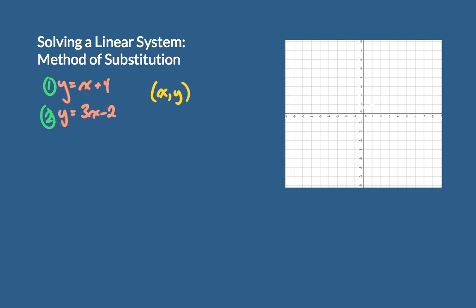We will know the solution when this y and this y are the same, and this x and this x are the same. To say it another way, we will have the solution when x equals x and y equals y — that is, x from the first equals x from the second, and y from the first function equals y from the second function.